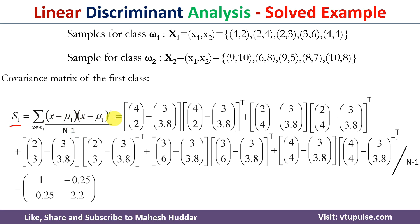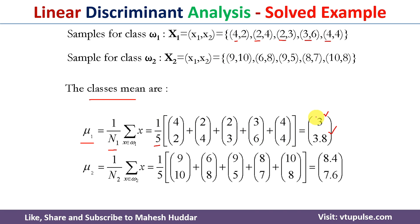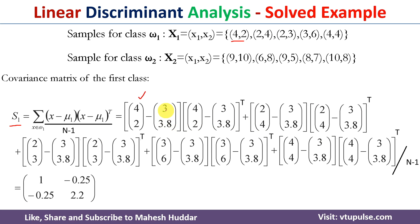To calculate S1, we first compute x minus mu1 for each data point. For the first data point x = (4, 2) and mu1 = (3, 3.8), so x minus mu1 = (1, -1.8). We then multiply this column vector by its transpose. For example, 1 times 1 = 1, 1 times -1.8 = -1.8, -1.8 times 1 = -1.8, and -1.8 times -1.8 = 3.24. We repeat this for all five data points and then divide the sum by n minus 1, which is 4.